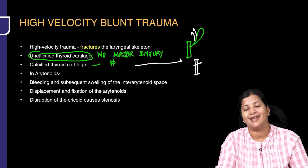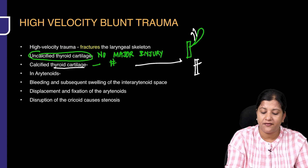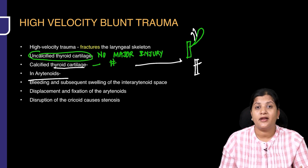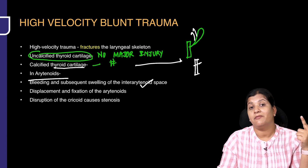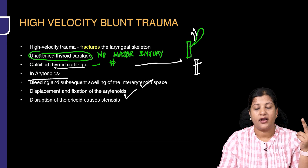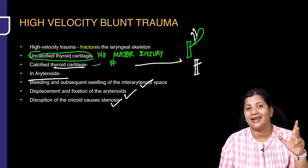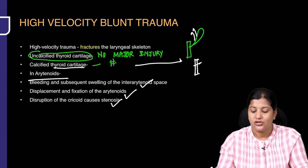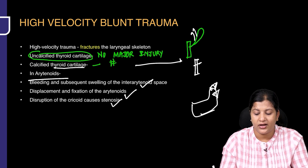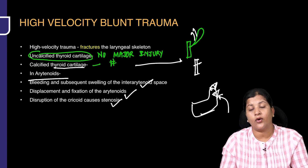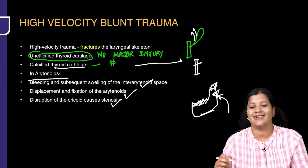You can also see displacement of the cartilage and bleeding into the spaces. If there is trauma to the arytenoids, there is a possibility of bleeding into the arytenoid space, displacement of the arytenoid, and displacement of the cricoid — because the cricoid and arytenoid are connected at the cricoarytenoid junction. The arytenoid sits on the superior facet of the cricoid, so injury to the arytenoid can also injure the cricoid.